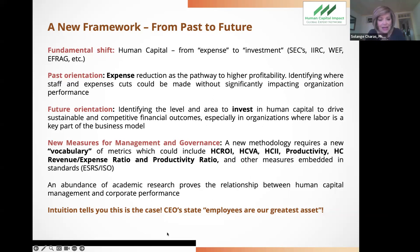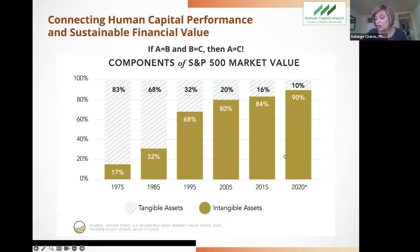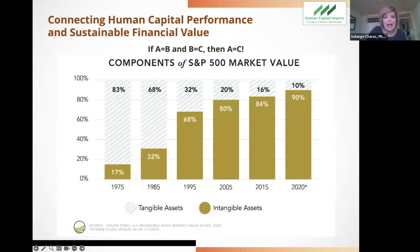Intangible assets is not just a throwaway concept. According to Ocean Tomo, 90% of S&P company market value is driven by intangible assets. And if human capital is considered an intangible asset, then we are part of the value-creating chain. If A equals B — human capital is an intangible asset — and B equals C — intangible assets are driving market value — then A equals C: human capital is driving market value. We have to think about a new way of quantifying and capturing that.